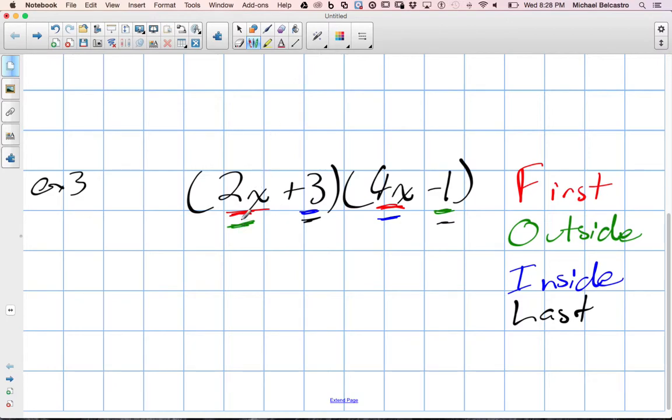Another way you can look at it is to take the first term in the first bracket and multiply it by both. And then you take the second term in the first bracket and multiply it by both. And that actually follows this exact order of FOIL. That's the idea.